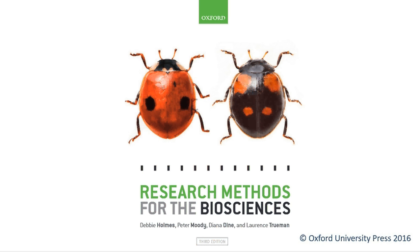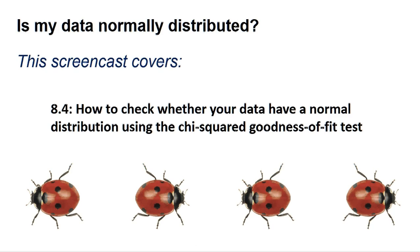Hello, welcome to another Research Methods for the Biosciences screencast for Minitab. This screencast gives you some advice on judging if your data is normally distributed and includes section 8.4: how to check whether your data have a normal distribution using the chi-squared goodness-of-fit test.